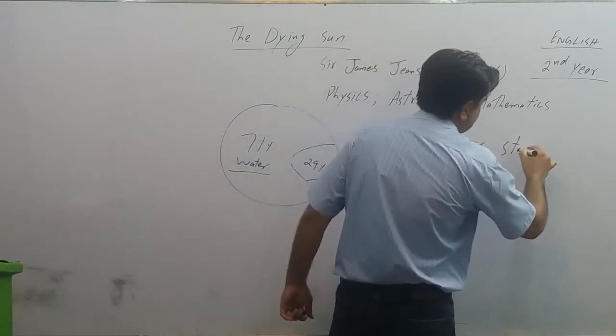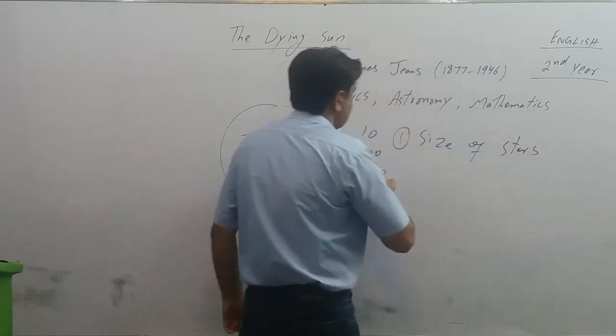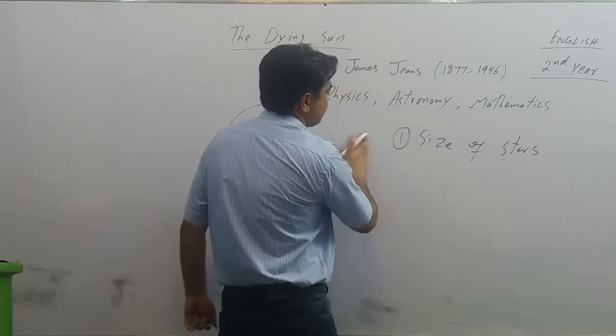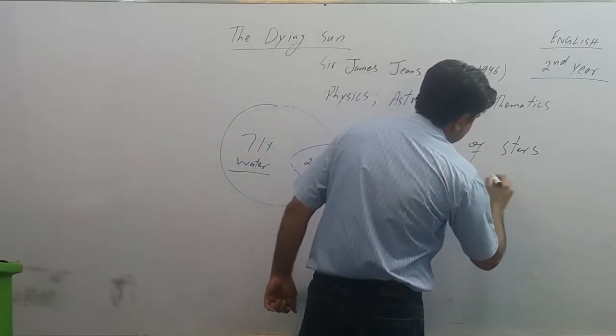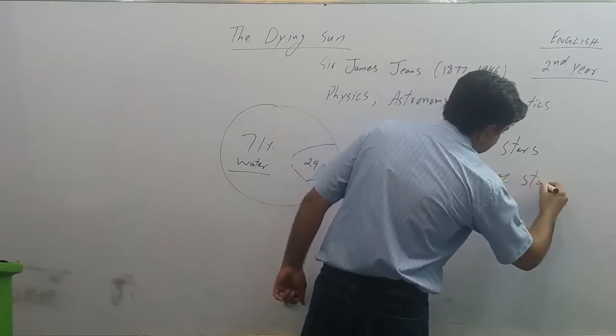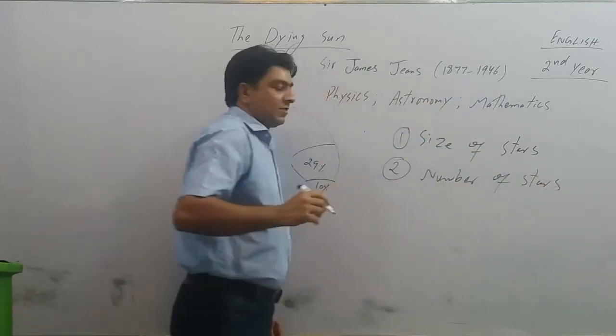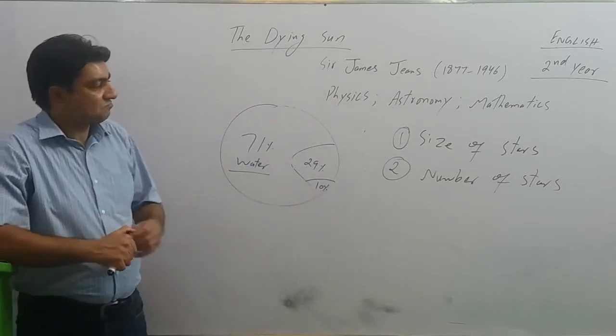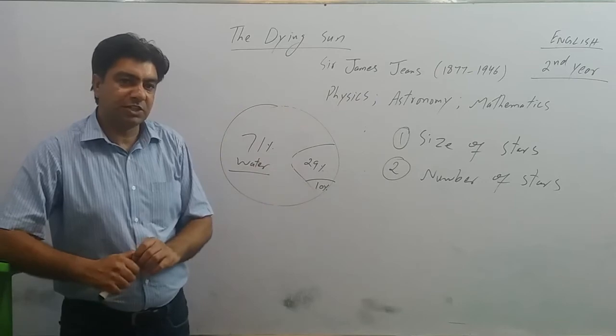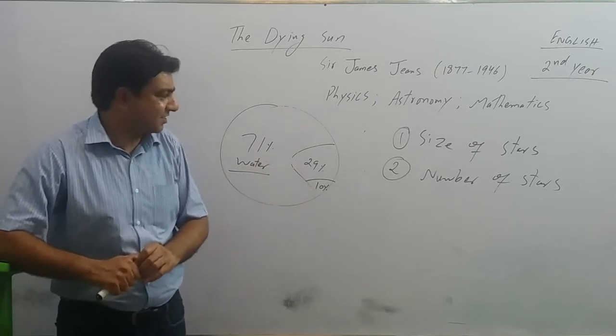You have got the idea of size of stars - stars are very big. Number of stars is in billions and trillions.